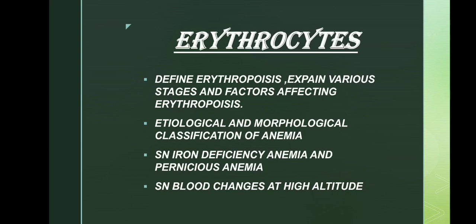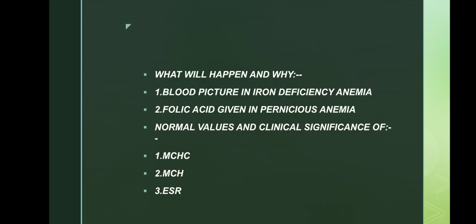From the erythrocytes chapter, define erythropoiesis, explain various stages and factors affecting erythropoiesis is very very important. Etiological and morphological classification of anemia is also very important. Short note on iron deficiency anemia and pernicious anemia is also important. Short note on blood changes at high altitude is very very important.